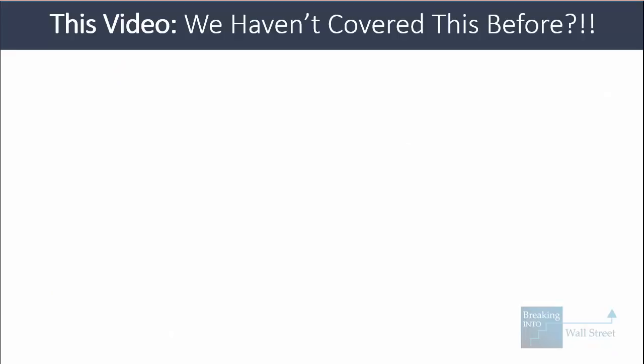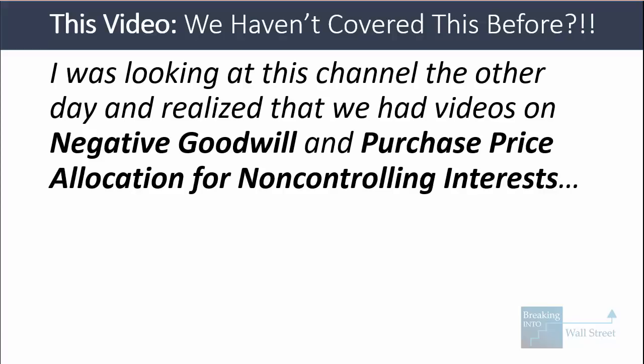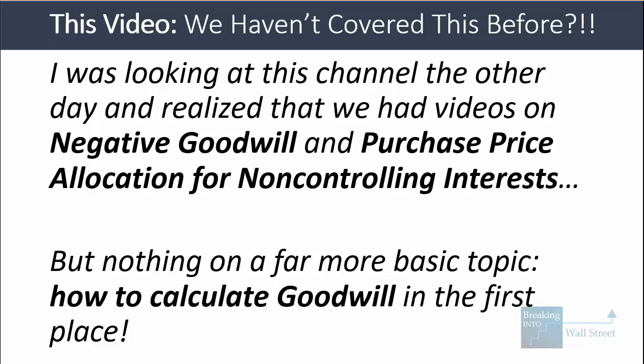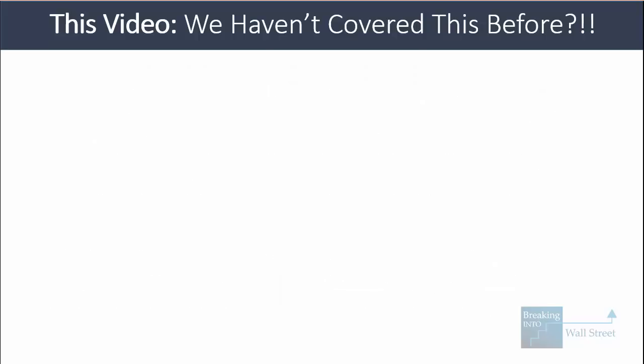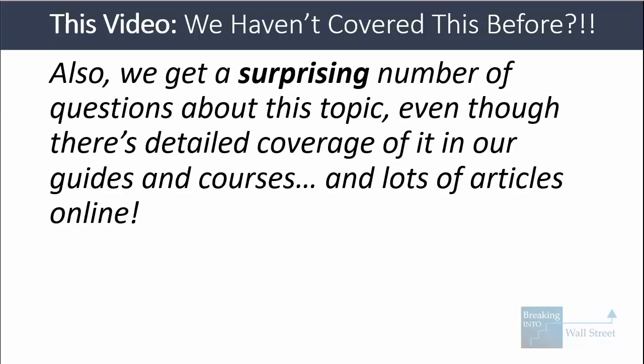This topic doesn't come from a reader question but from the fact that looking at this channel, we had videos on negative goodwill and bargain purchases and purchase price allocation for non-controlling interests, but nothing specifically on the more basic topic of how to calculate goodwill in the first place. Even though it's fairly basic, we get a surprising number of questions about it despite detailed coverage in our guides and courses and many articles online — it still causes a fair amount of confusion.